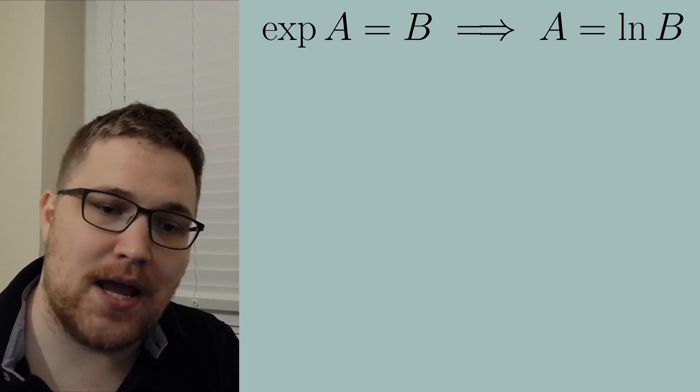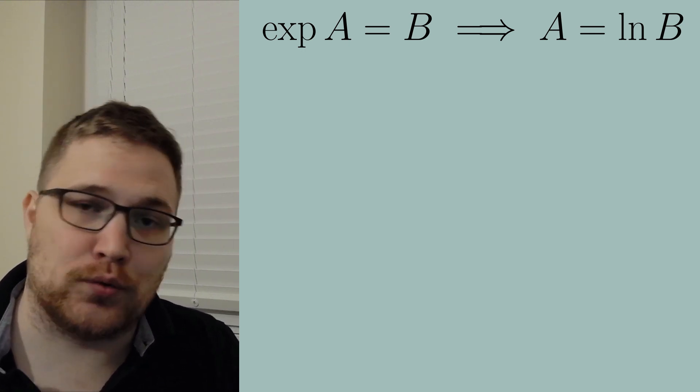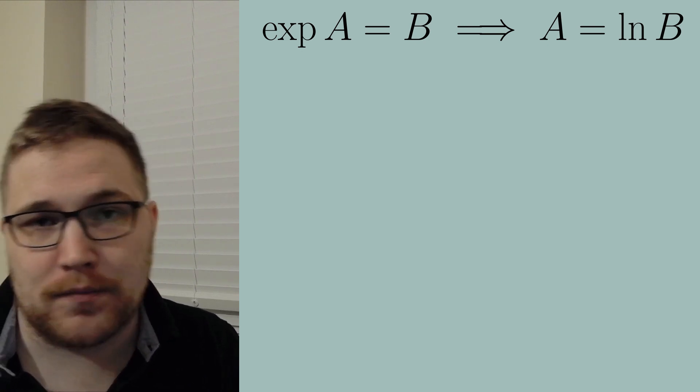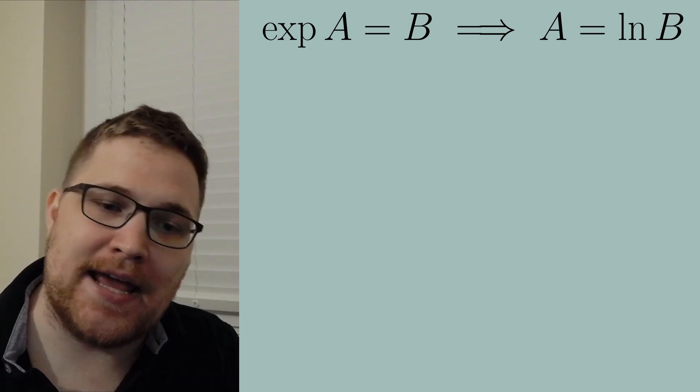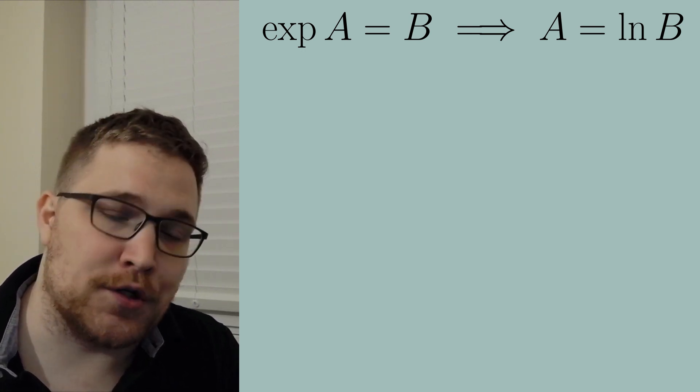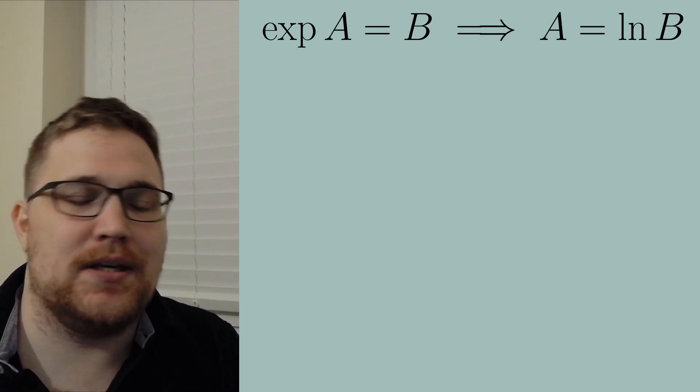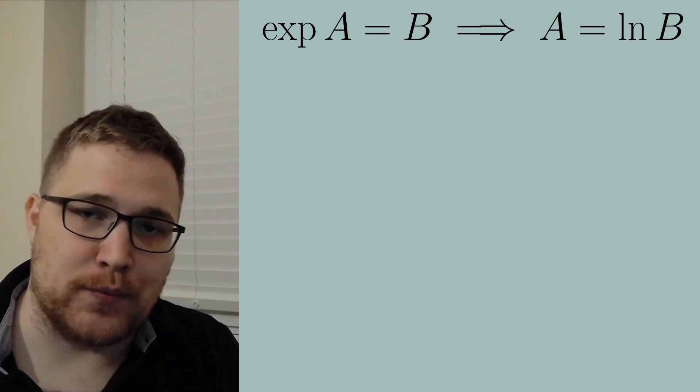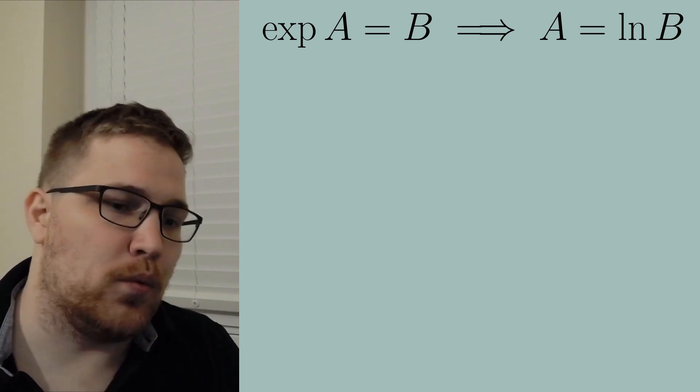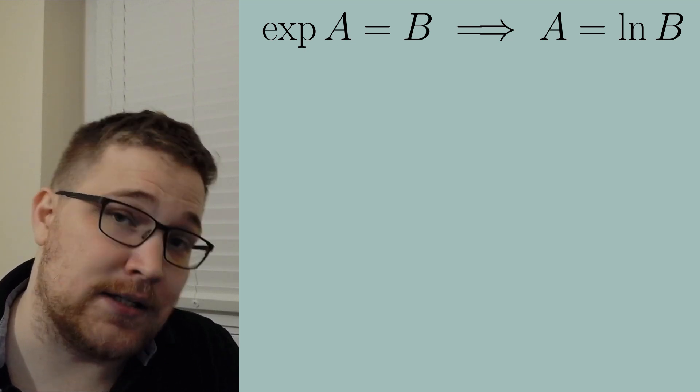The matrix logarithm is defined such that if the exponential function of the matrix A equals B then the matrix A is equal to the natural logarithm of the matrix B. We will assume here that A and B are Hermitian matrices because in all cases that we're going to be interested in this will be precisely the case. And what this means for us is that B is diagonalizable as we have seen of course with ρ so we can again introduce a unitary transformation to put it into a diagonal form.